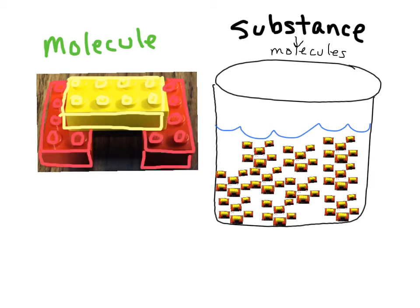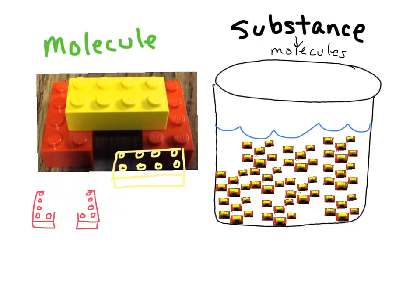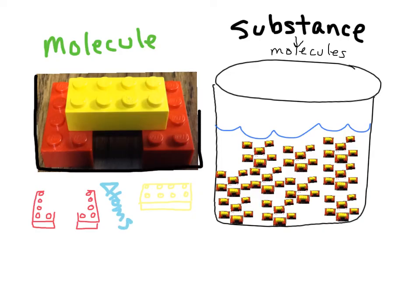So first we have substances. They're made up of molecules. Now we're going to take this molecule apart. So here's my two hydrogens. Here comes my oxygen. And these are the next smallest thing. They're called atoms. So here we have an oxygen atom and two hydrogen atoms. So molecules are made up of atoms. Substances are made of molecules. Molecules are made of atoms. And specifically, this is an oxygen atom and two hydrogen atoms.